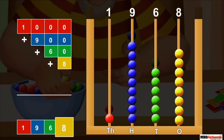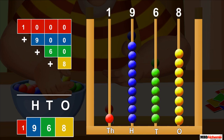In 1,968, eight is at the ones place, six is at the tens place, nine is at the hundreds place, and one is at the thousands place. In the same way, we can build many four-digit numbers on an abacus.